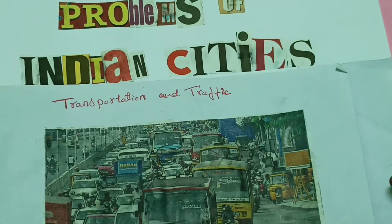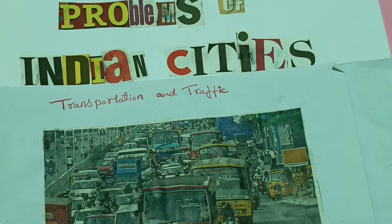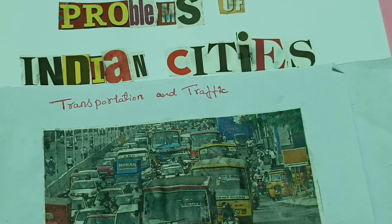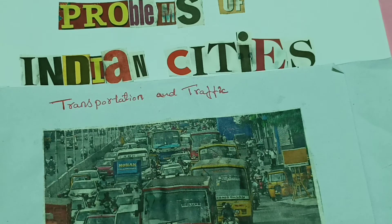The next is transport and traffic problem. This is one big problem we all suffer from. The majority of people use buses and other vehicles, and few use rail and other transport systems. The increasing number of two-wheelers and other vehicles makes traffic problems worst in cities. This is one of the common problems we can find in big cities like Bangalore and many others. The next problem is water supply and drainage.